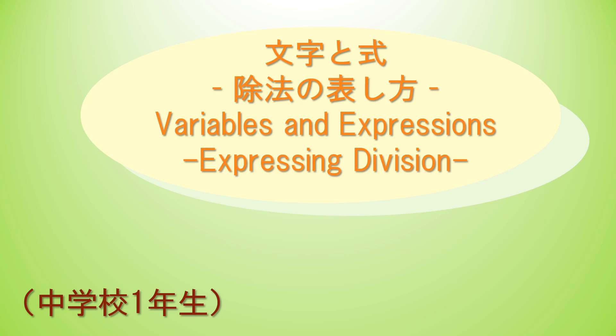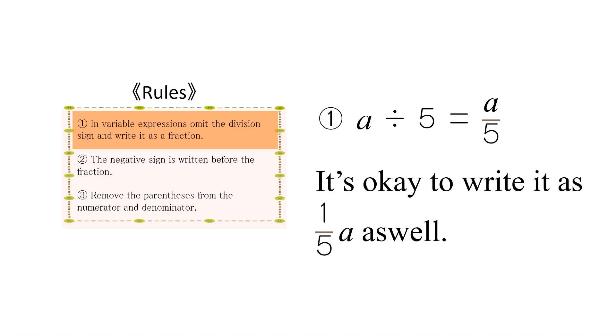The first rule is that in variable expressions we omit the division sign and write it as a fraction. a divided by 5 is expressed as a/5. It can also be written as (1/5)a.